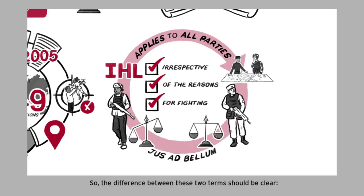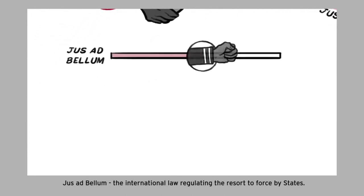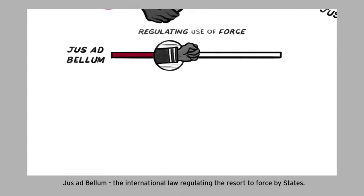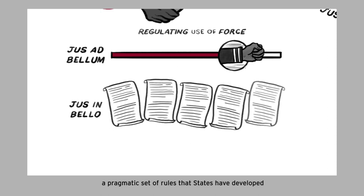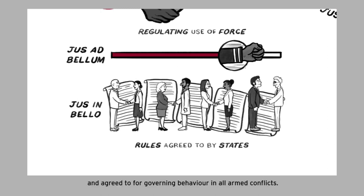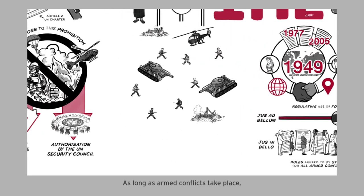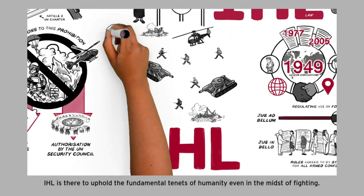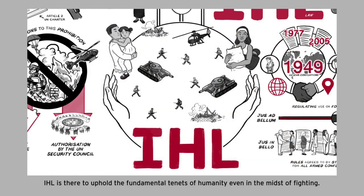So the difference between these two terms should be clear. Jus ad bellum: the international law regulating the resort to force by states. Jus in bello: IHL — a pragmatic set of rules that states have developed and agreed to for governing behavior in all armed conflicts. As long as armed conflicts take place, IHL is there to uphold the fundamental tenets of humanity, even in the midst of fighting.